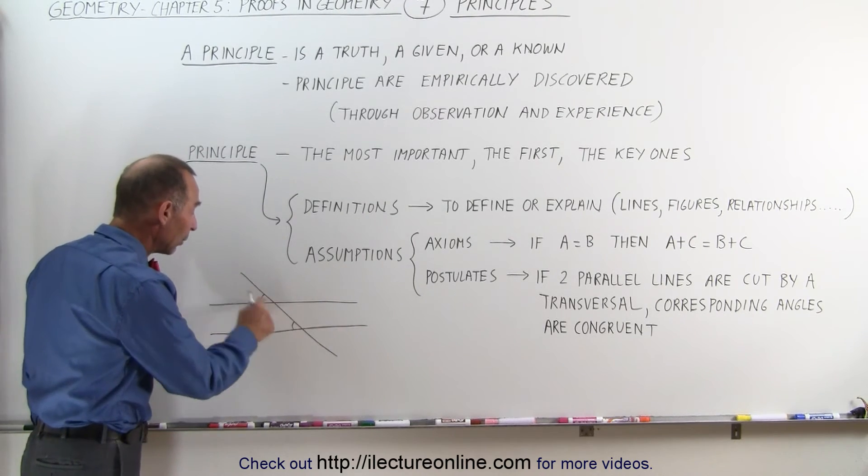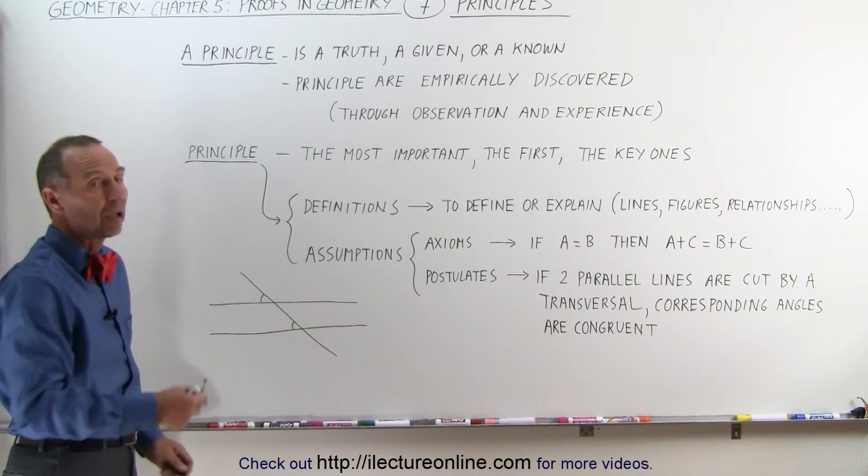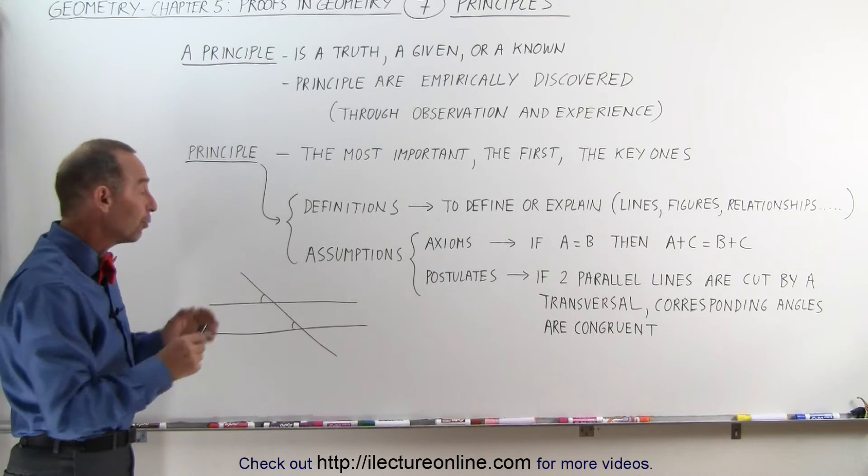And they are equal in size, and therefore, they're called congruent angles. That is what we call a postulate. We don't need to prove that. We know that. Of course,